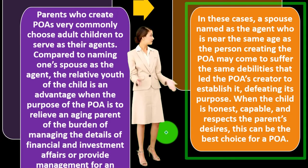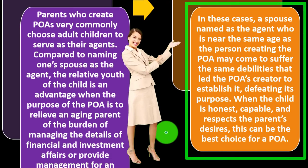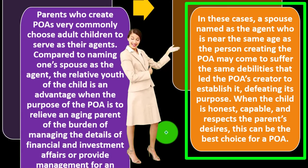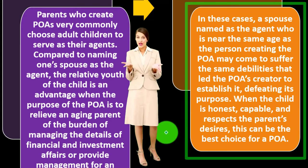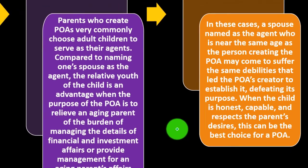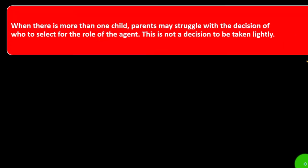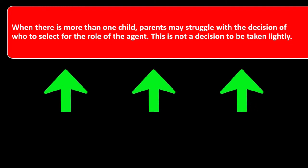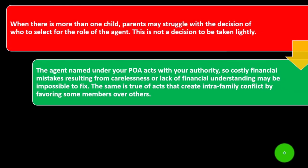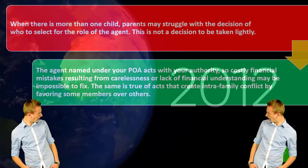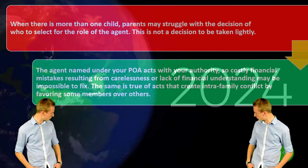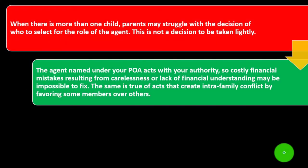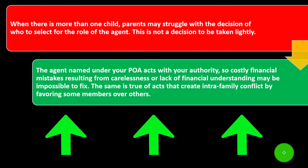A spouse named as agent who is near the same age as the POA's creator may come to suffer the same debilities that led to establishing the POA, defeating its purpose. When the child is honest, capable, and respects the parent's desires, this can be the best choice. When there is more than one child, parents may struggle with the decision of who to select as agent — this is not a decision to be taken lightly, as the agent named acts with your full authority.